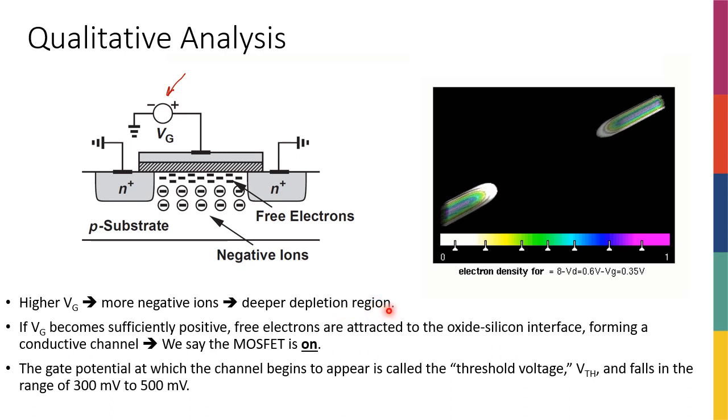But then, some other process or some other phenomenon that is happening is that as I'm increasing this VG, because I have these two N plus diffusion regions here for the drain and for the source, and they're full of free electrons, I'm going to start to attract some free electrons from these two areas.